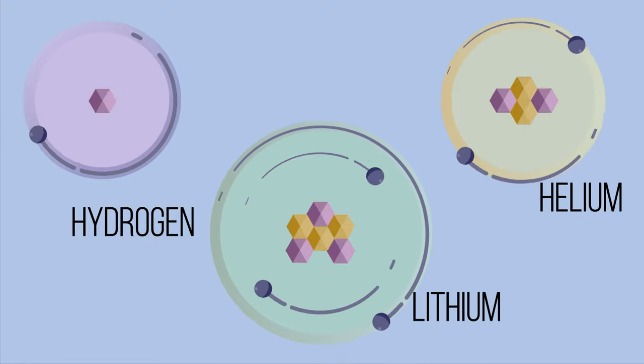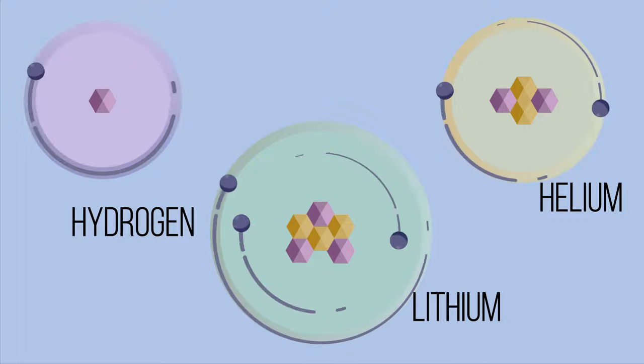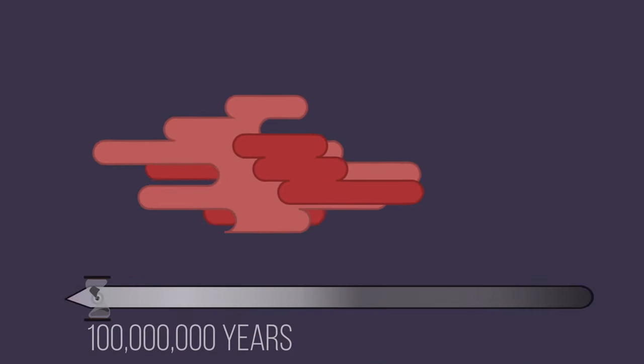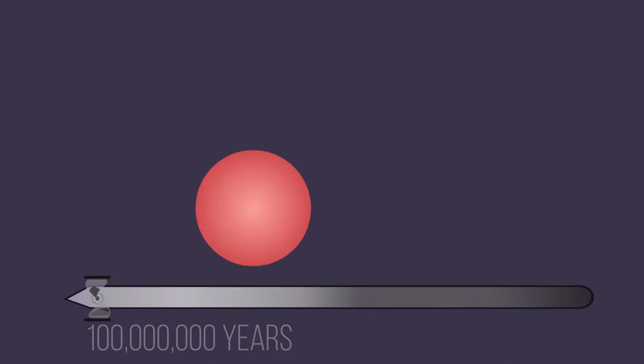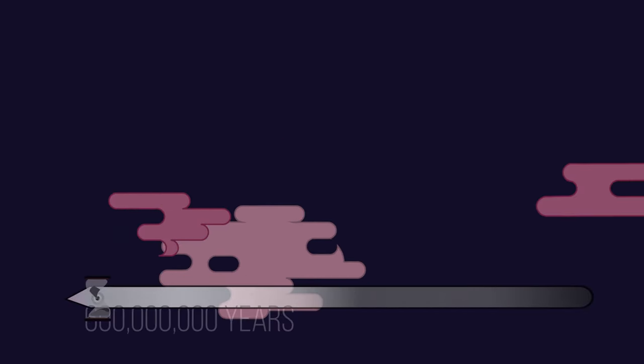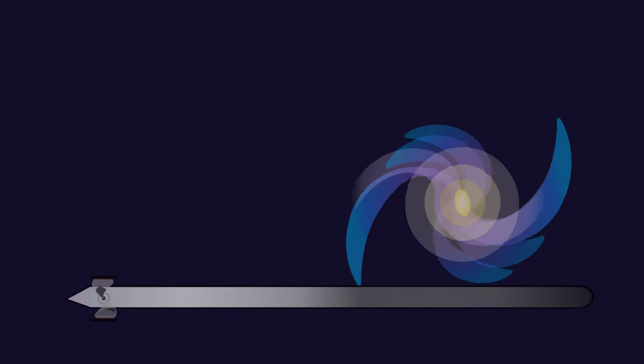As we move forward in time, the photon wavelength continues to stretch. At 100 million years, matter condenses to form stars. At 600 million years, our home galaxy, the Milky Way, is born.